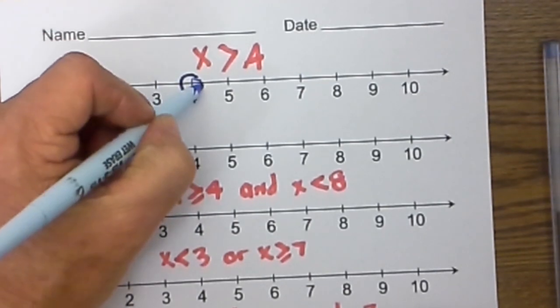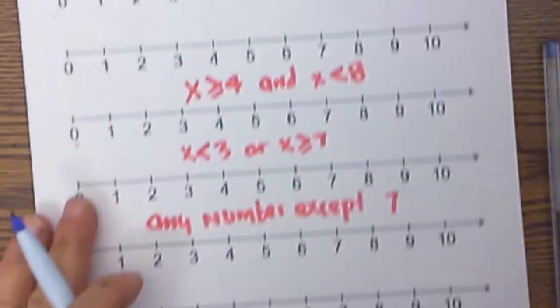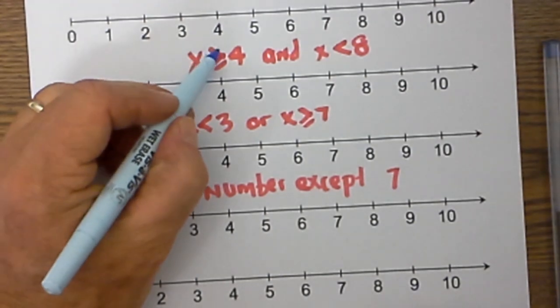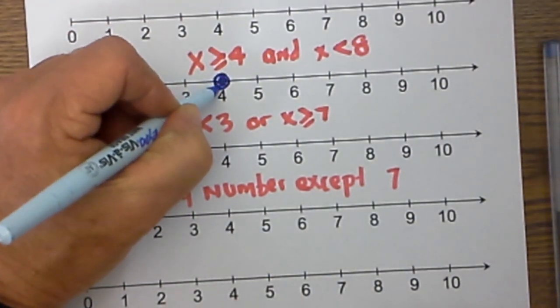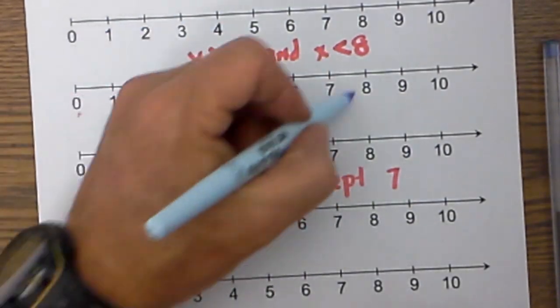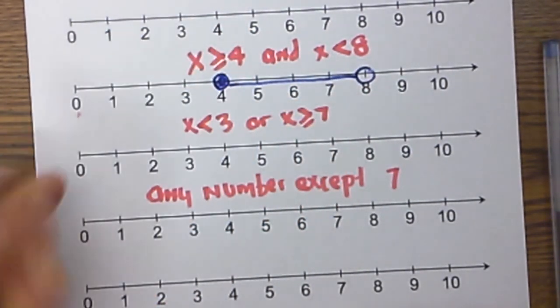It is greater than 4, so it will be drawn like this. How about x is greater than or equal to 4, so that is closed, and it is less than 8. That will be open, and it will be drawn like this.